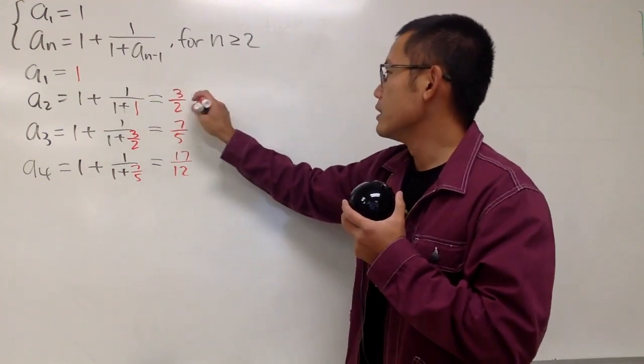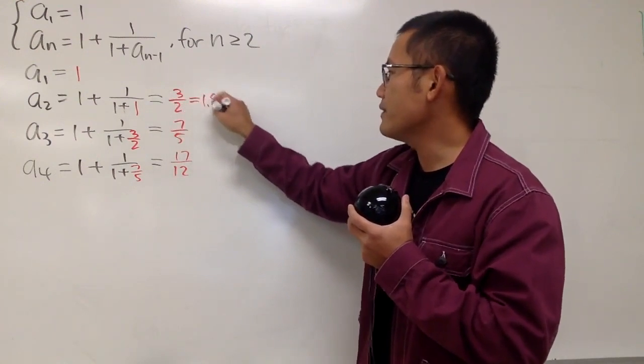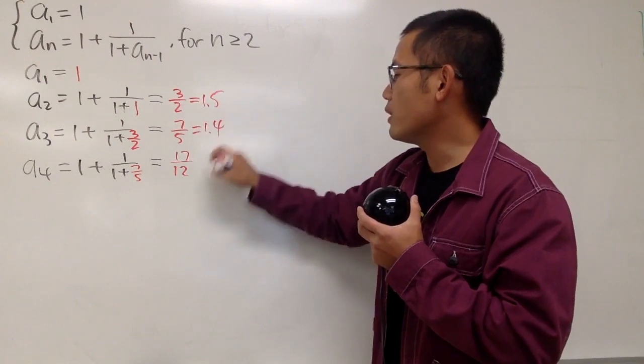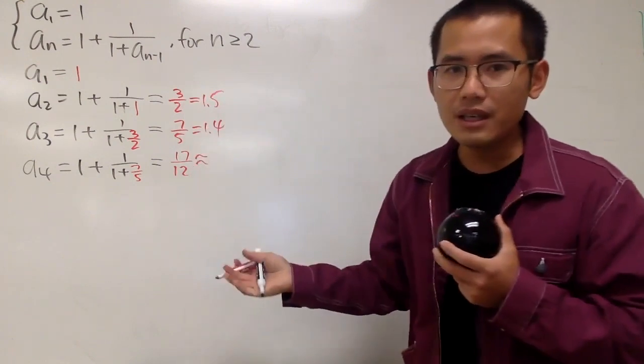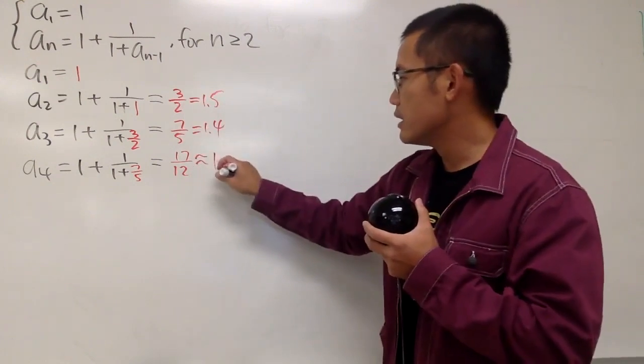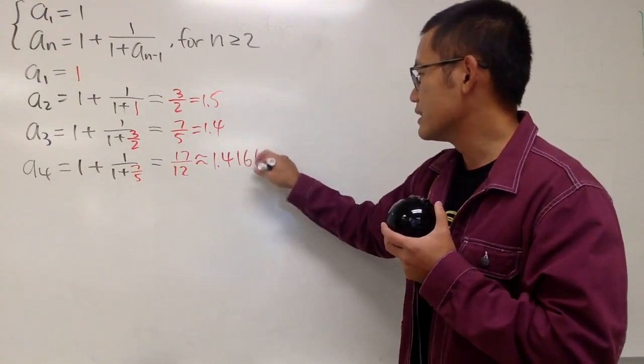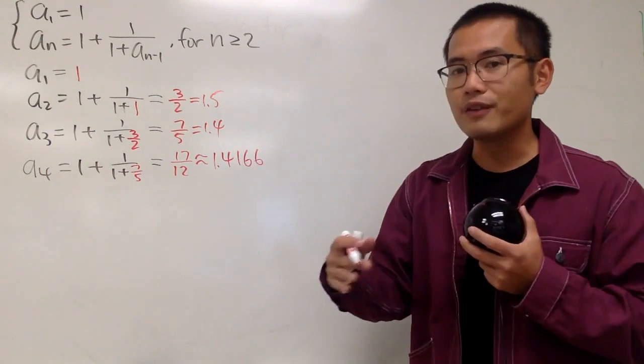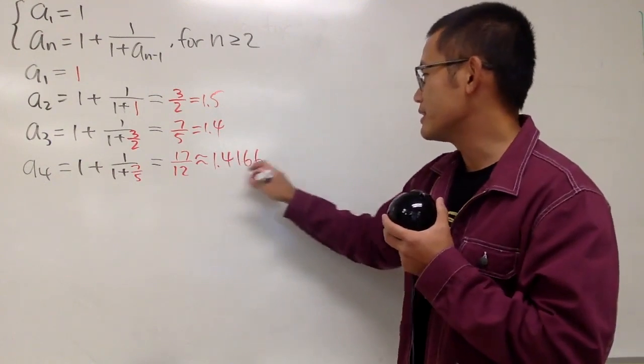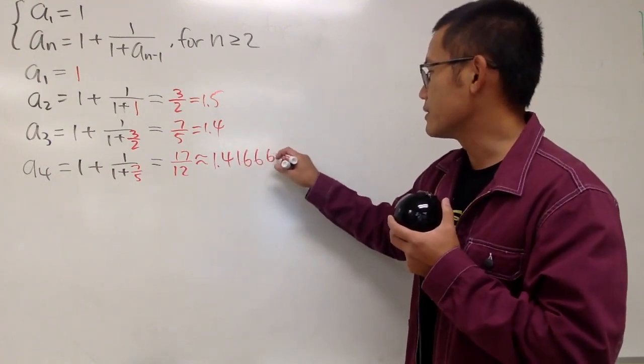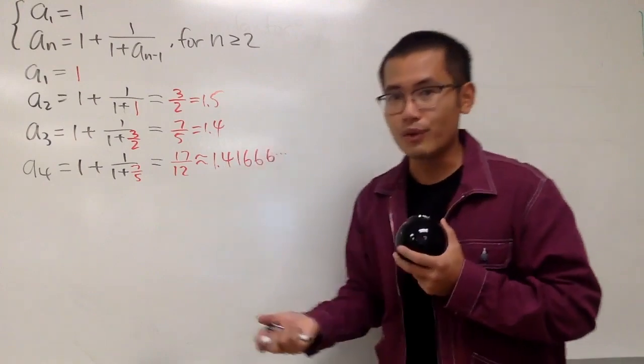1 is 1, of course. This right here is equal to 1.5. This right here is equal to 1.4. And this right here is approximately equal to 1.414166, and I'm just going to cut it off. I'm not going to round, okay? So it's just 66, and one more, right? And then just dot, dot, dot, because it keeps on going forever.